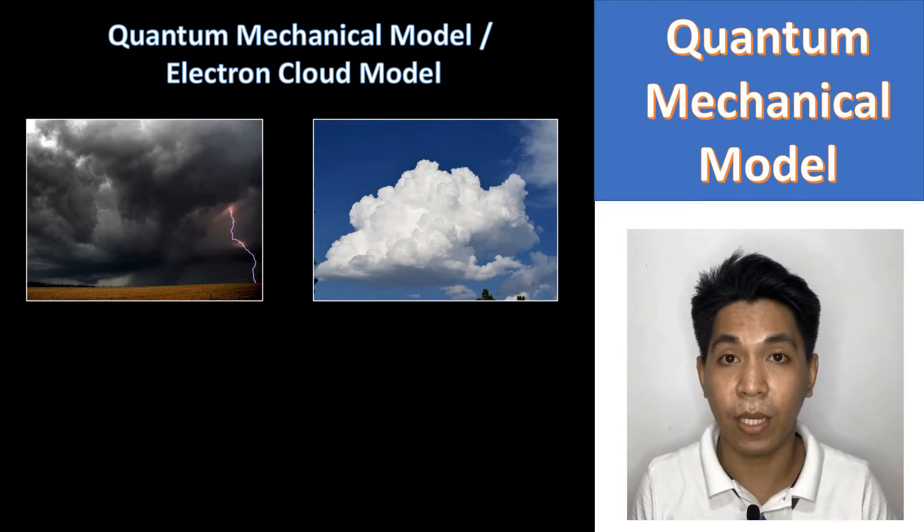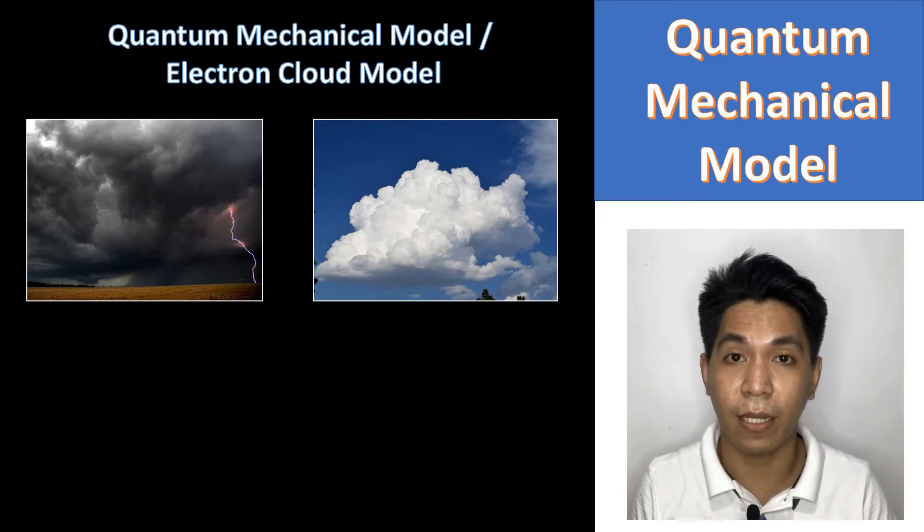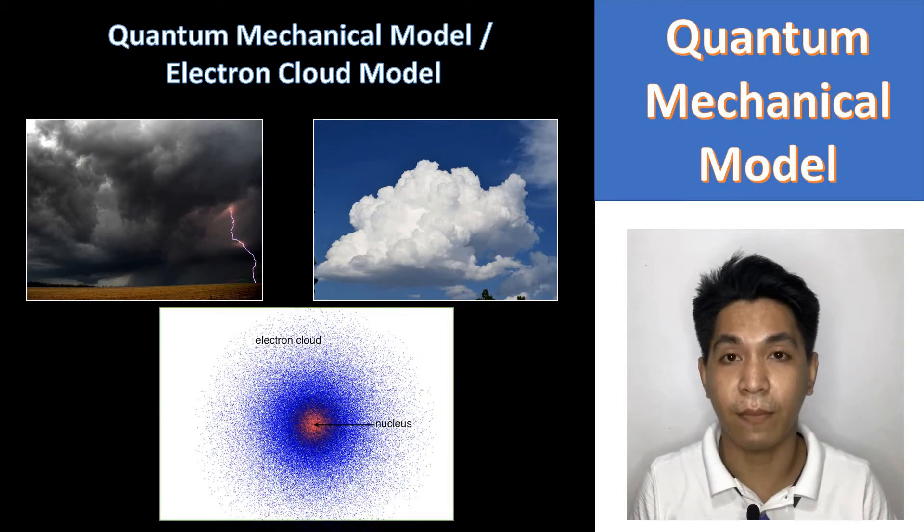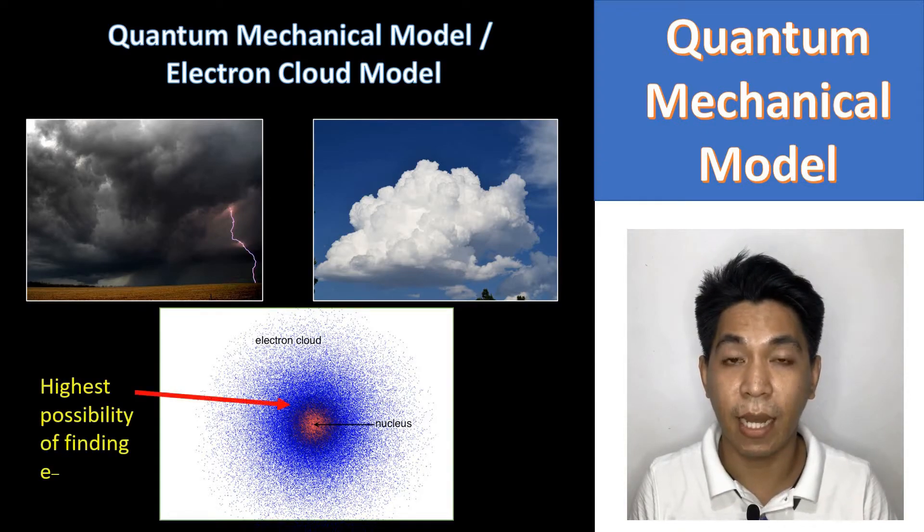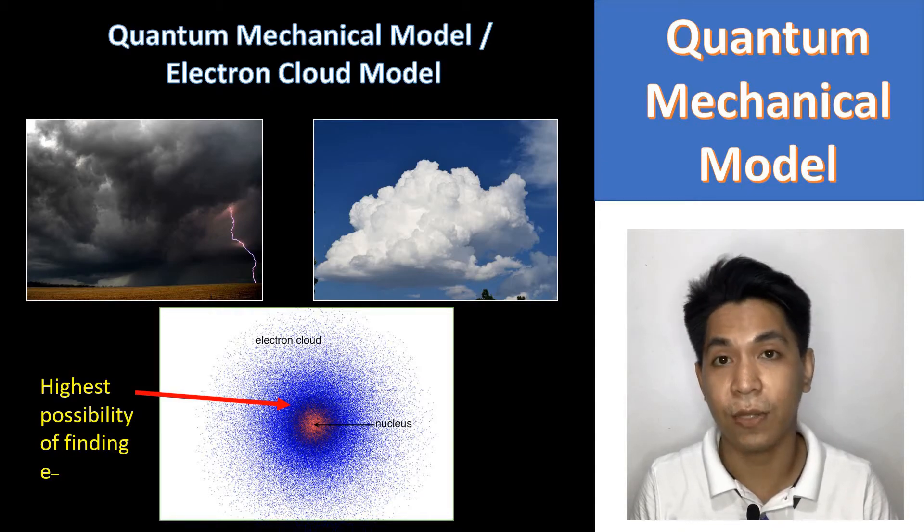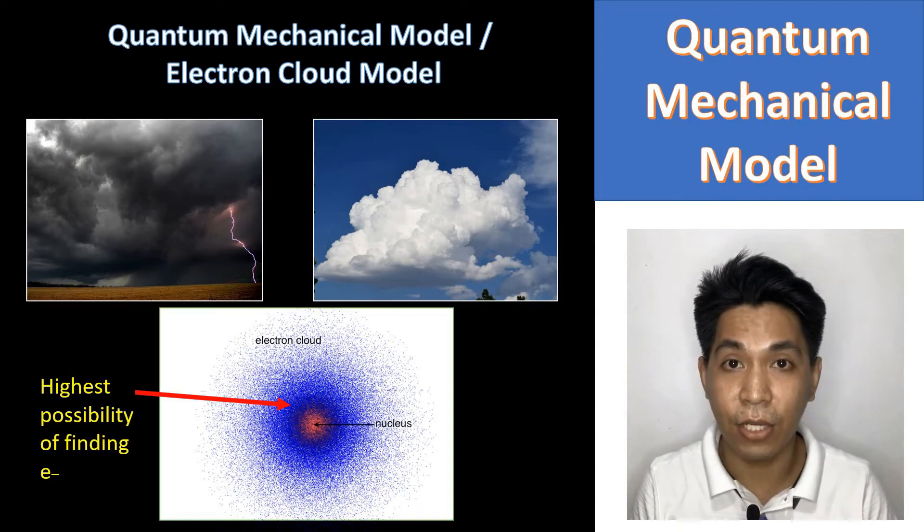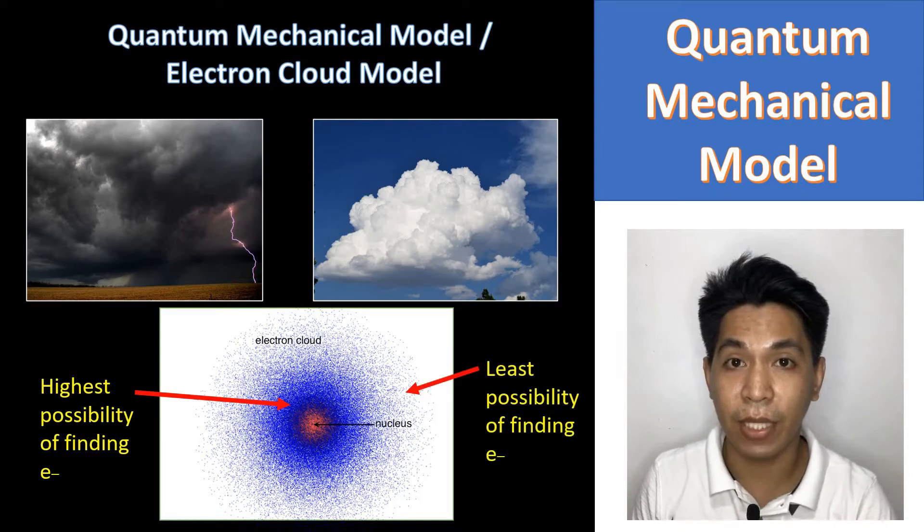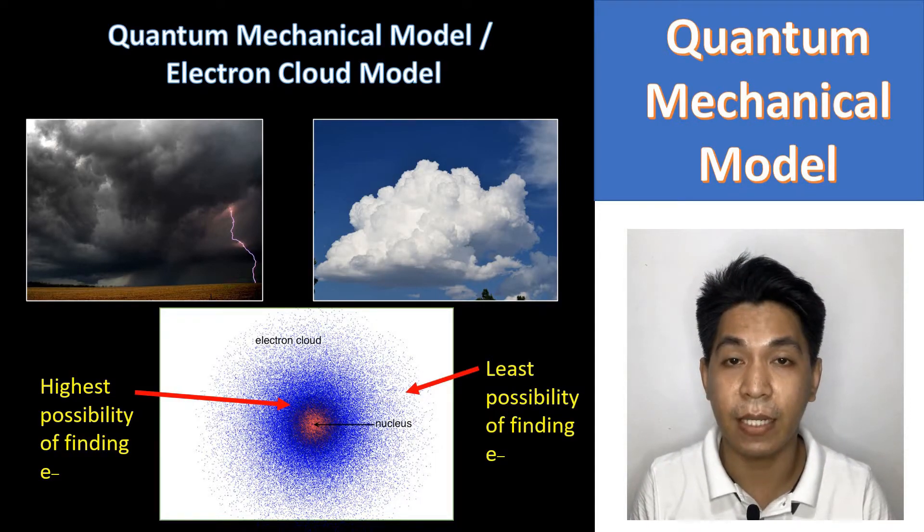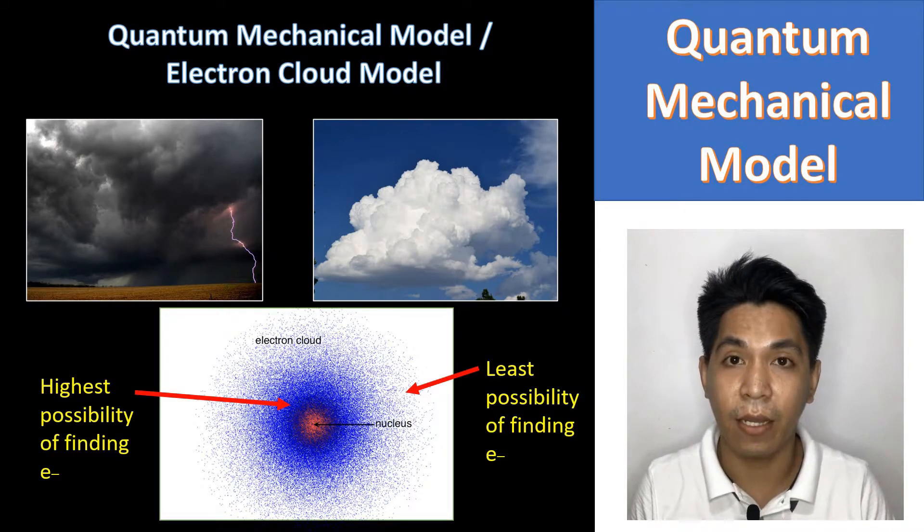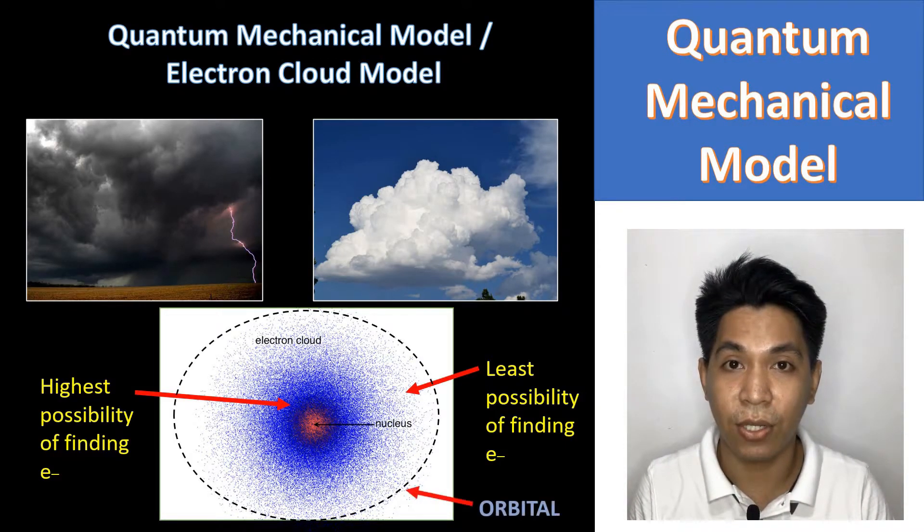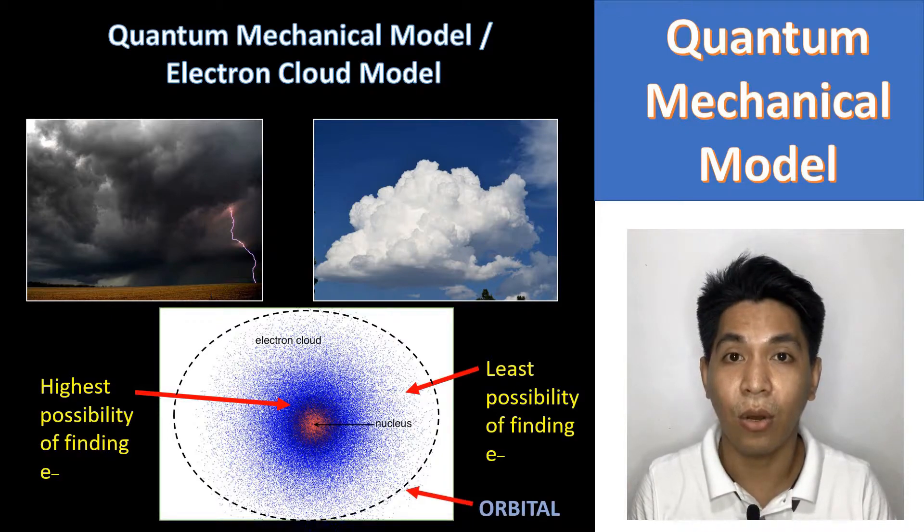Same as with the Quantum Mechanical Model. In this model, for example, the darker region represents the highest possibility of finding the electrons. The lighter region, on the other hand, represents the least possibility of finding the electrons. This entire area where we can find electrons is what we call orbital.